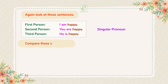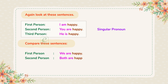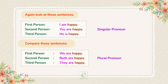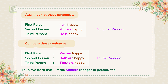Compare these sentences. First person: we are happy. Second person: both are happy. Third person: they are happy. Plural pronoun. Thus, we learn that if the subject changes in person, the verb also changes.